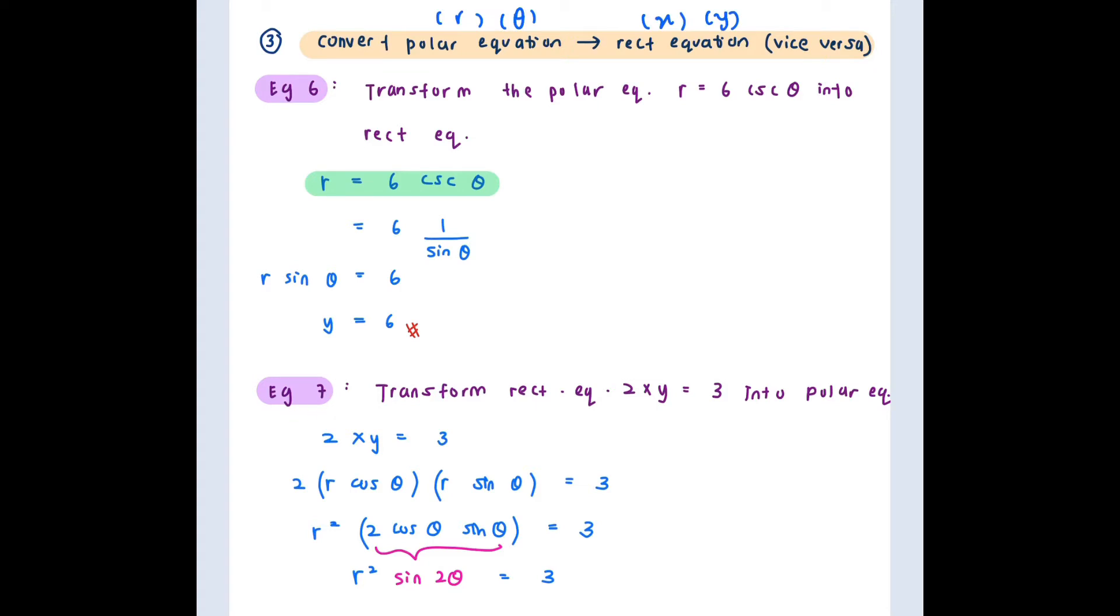Now let's see example 7. Transform rectangular equation 2xy equals 3 into polar equation. So obviously this is a rectangular equation because you have x and y. So let's substitute 2x is R cos theta, y is R sin theta equal to 3.